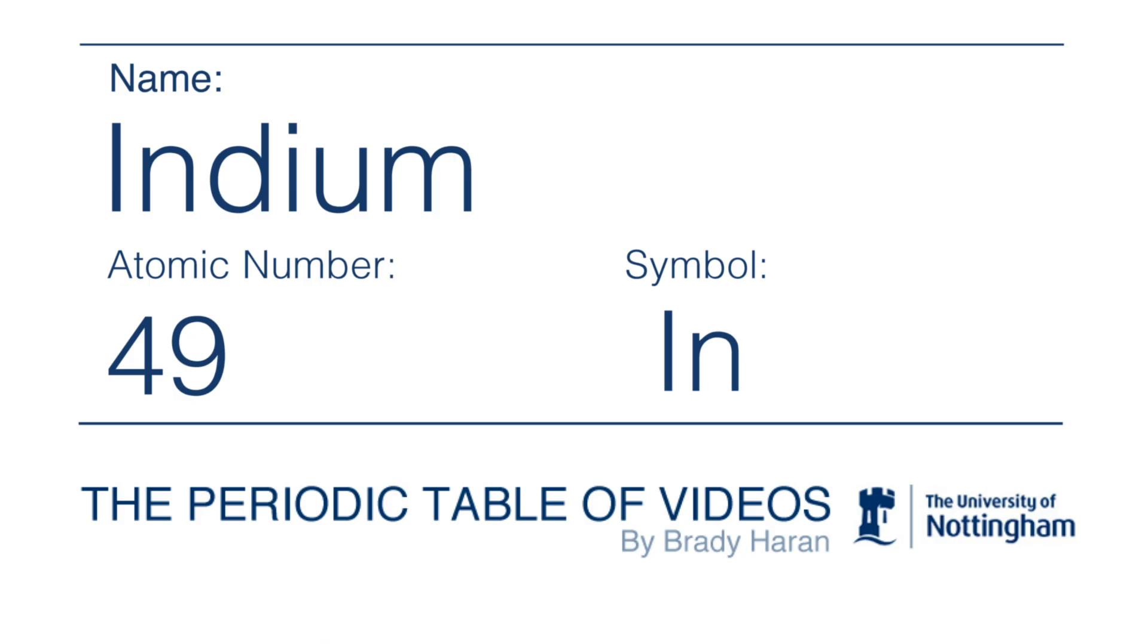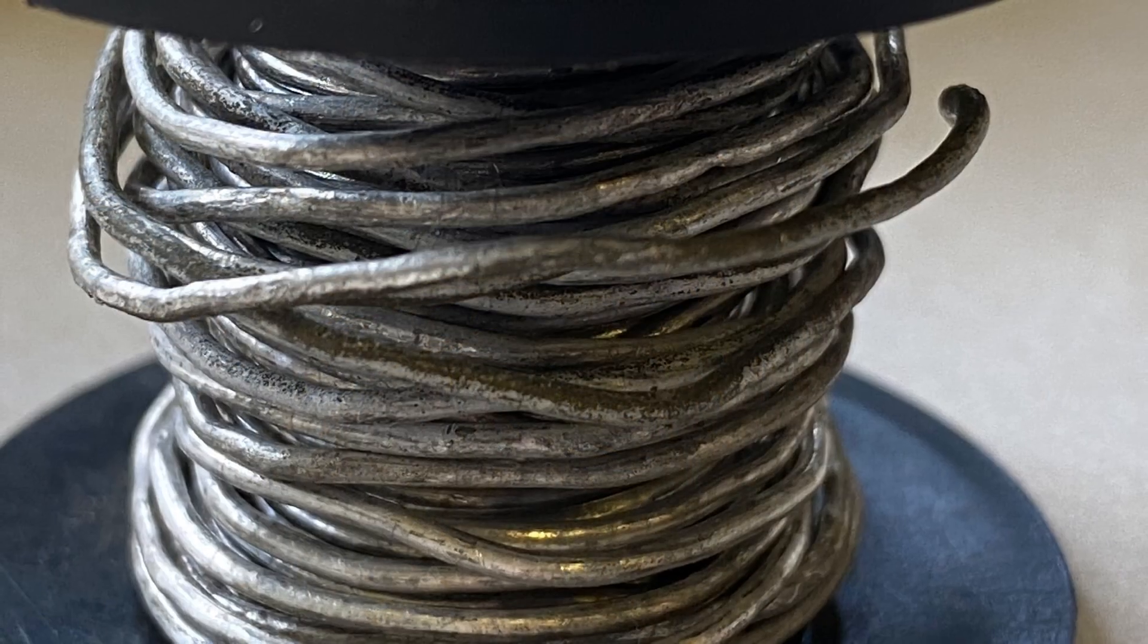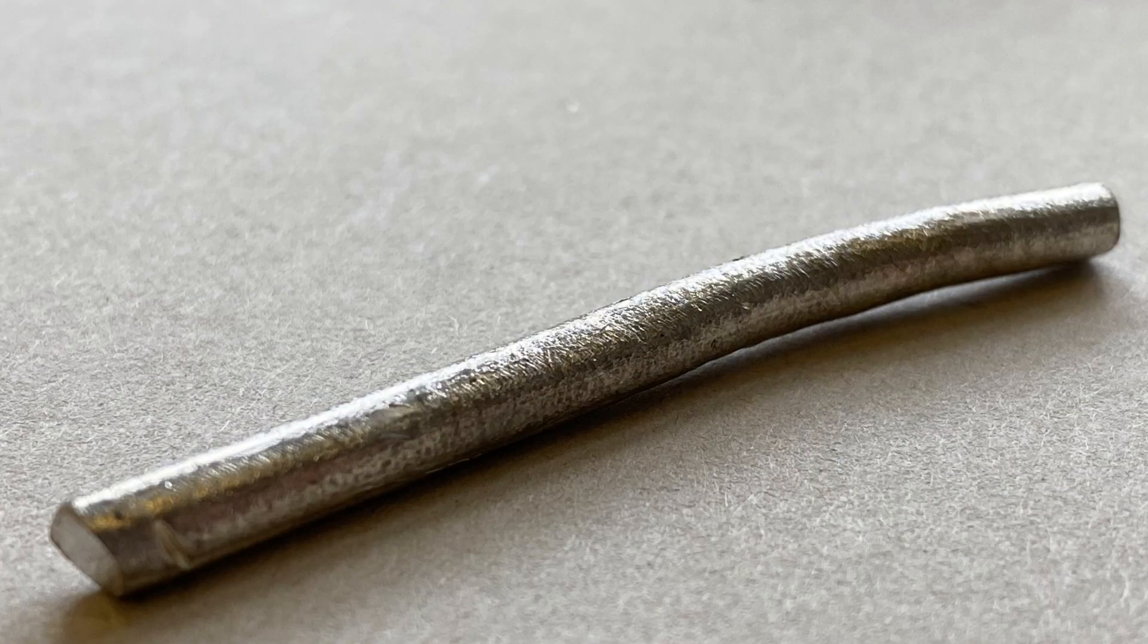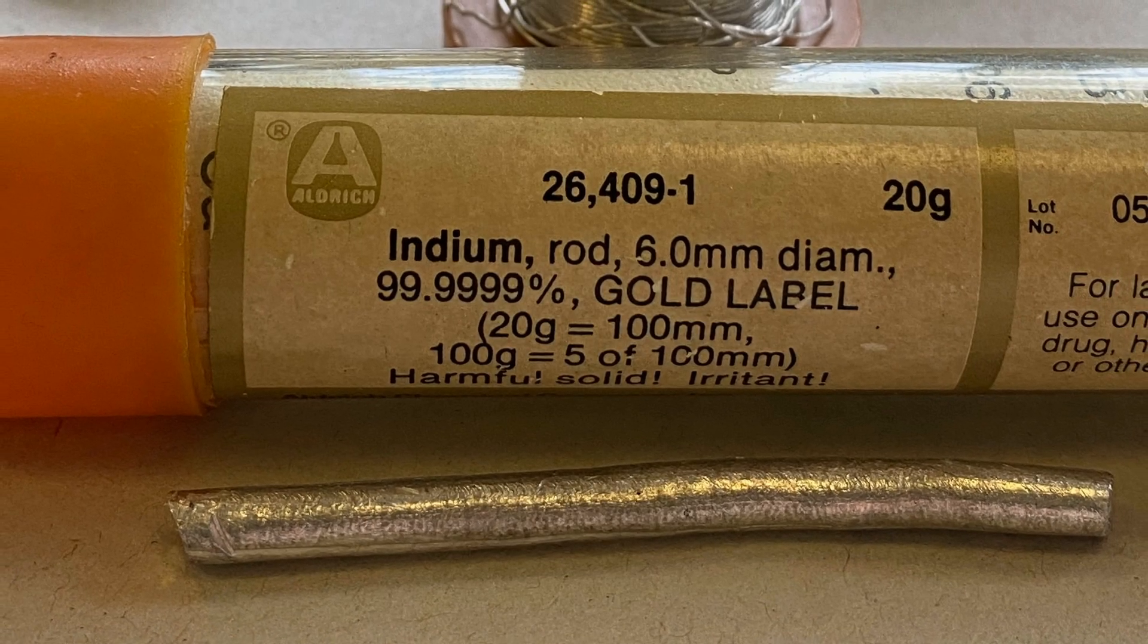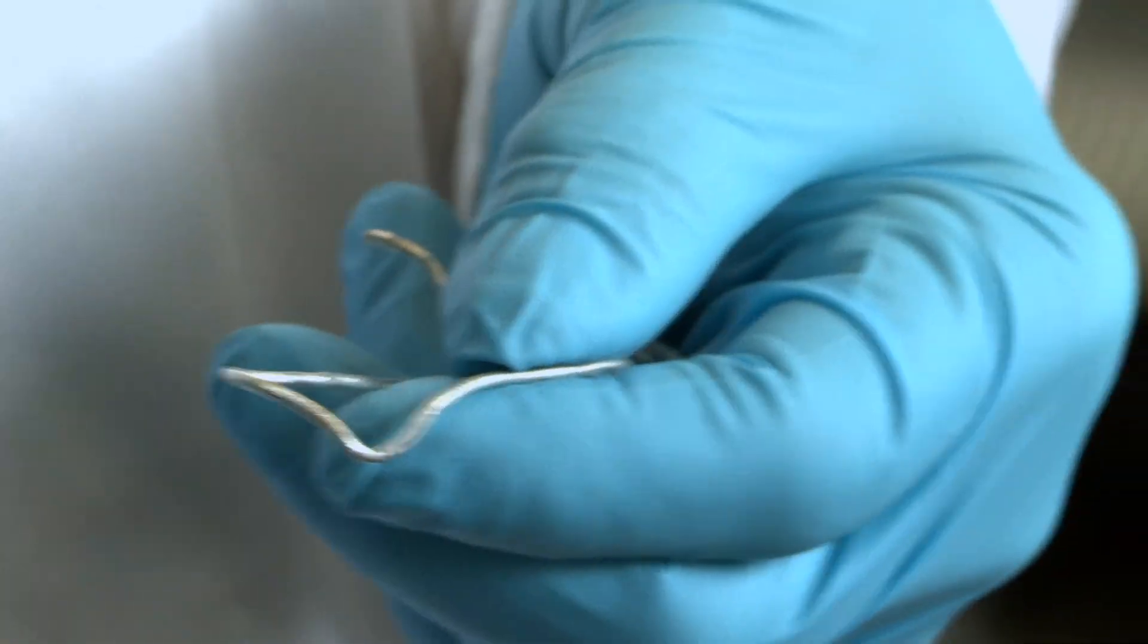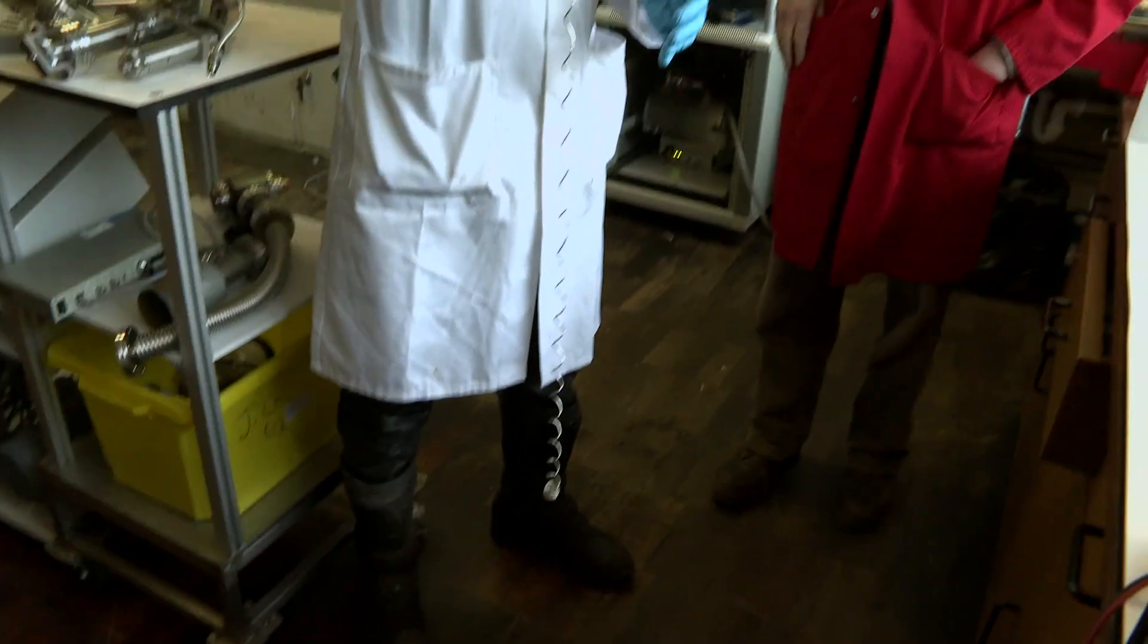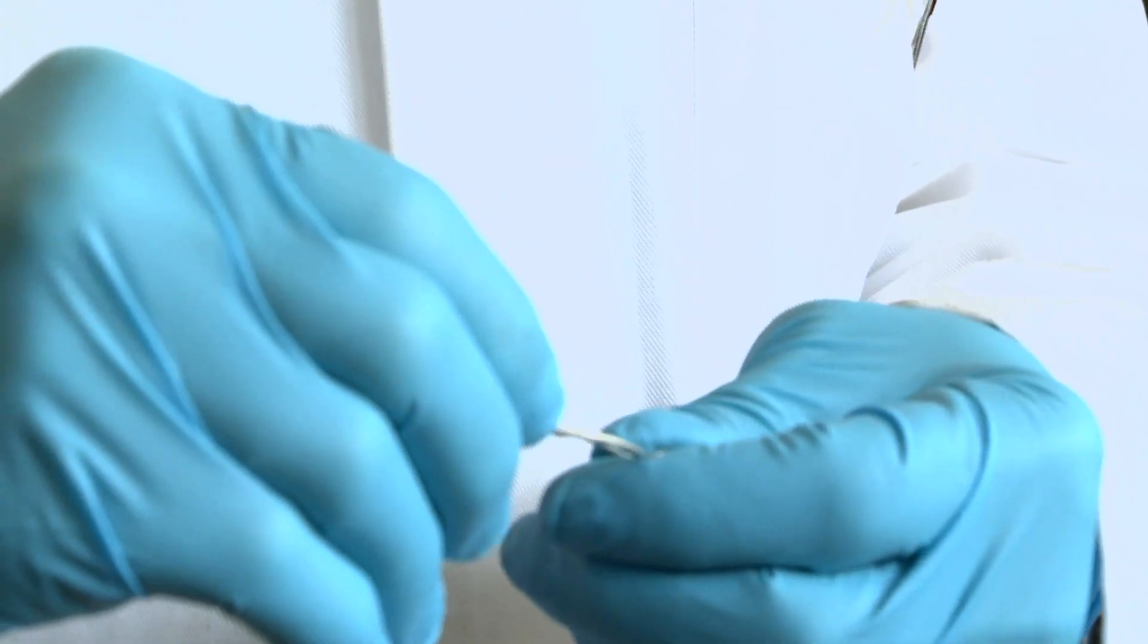Neil has quite a few samples of indium because it is a slightly poisonous element and people give it to him rather than having to dispose of it themselves. He has a selection of pieces of rods and wires and a really quite nice thick wire that was originally coiled, and he showed how you can just pull the coil apart. And even this thick wire is so bendy that when you push your hands together it just bends with almost no effort at all.